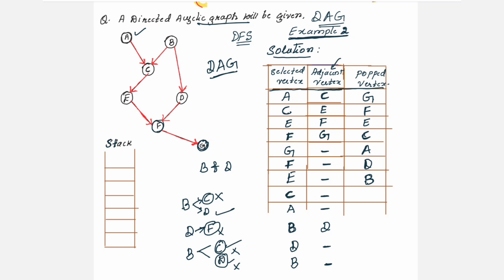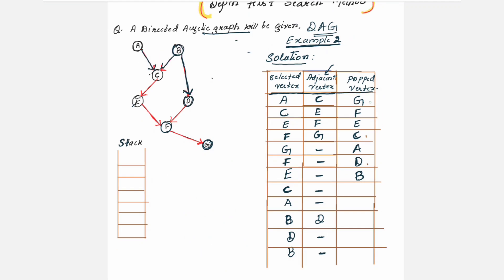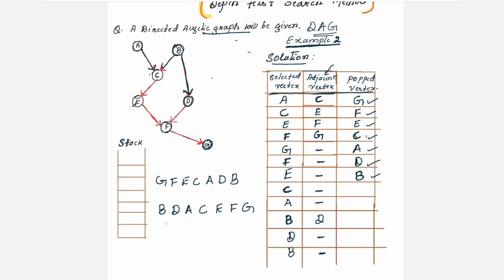The algorithm will see that all vertices are visited. Now check all the nodes in the popped vertex column: G, F, E, C, A, D, B. The same sequence is G, F, E, C, A, D, B. Reverse this and you get B, D, A, C, E, F, G. So this is your final answer.